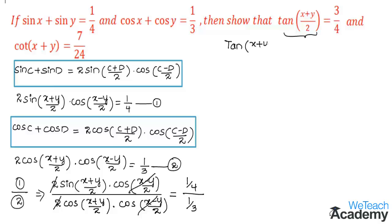So tan((x+y)/2) equals 1 by 4 multiplied by the reciprocal of 1 by 3, which is 3 by 1. Multiplying these terms: 3 into 1 is 3 divided by 4 into 1 which is 4. Hence we have proved that tan((x+y)/2) is equal to 3 by 4.